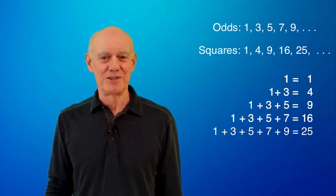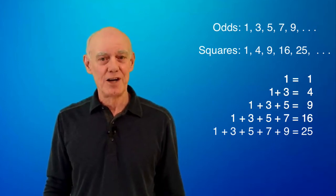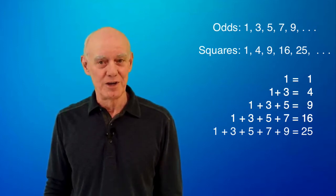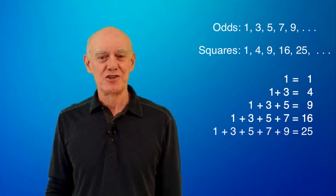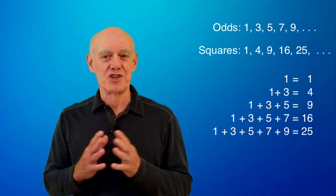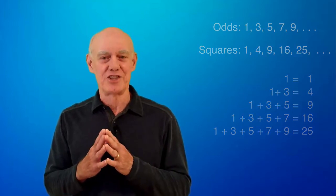Look at what a nice relationship this is. Add the first 2 odds, get the second square. Add the first 3 odds, get the third square. Add the first 4 odds, get the fourth square. I see relationships like this and I say to myself, you know what, everything's okay. Things are just connected and it feels good when I see it.